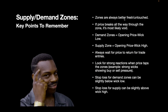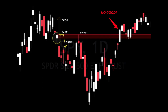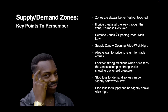For supply and demand zones, key points to remember: zones are always better fresh and untouched — the best and fastest reactions usually come from the first test. If price breaks all the way through, the zone is most likely void — if it closes under or over a supply and demand zone, it's likely not working as well anymore. You could use it as a future reference point for support or resistance, but I usually remove them. For demand zones, your zone is opening price to wick low; for supply zones, it's opening price to wick high. Always wait for price to return for trade entries.